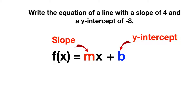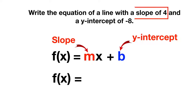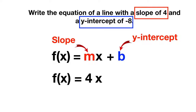So here we would write f of x is equal to — and we can read in our problem that there's a slope of 4, so we'll write 4x. And then we can read that there's a y-intercept of negative 8, so instead of adding negative 8, we can just write subtracting 8.